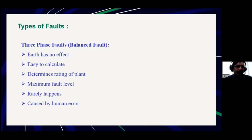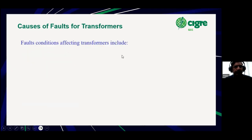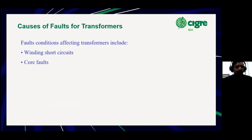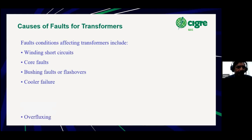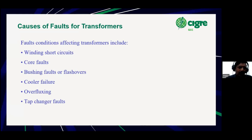If the transformer can withstand a three-phase short circuit on the bushing, then all other downstream faults which include greater impedance and earth faults, the transformer should be able to withstand. The various types of faults that can happen in the transformer include short circuit of windings, core faults, bushing faults or flashovers, cooler failure, core fluxing, and faults on the tap changers. There are also transformer mechanical devices of protection, but this presentation will only focus on the electrical devices of protection.